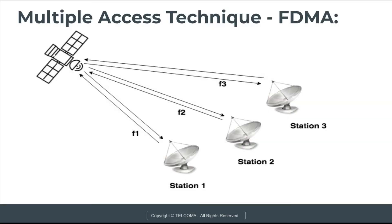This diagram shows three ground stations communicating with a single satellite using three different frequencies. Each station is assigned a specific frequency band for its uplink — F1, F2, and F3. The frequency-per-time plot shows that each ground station has exclusive use of its frequency band or slot. These frequency slots can either be pre-assigned or changed on demand, and frequency guard bands are used to avoid interference between the user slots.